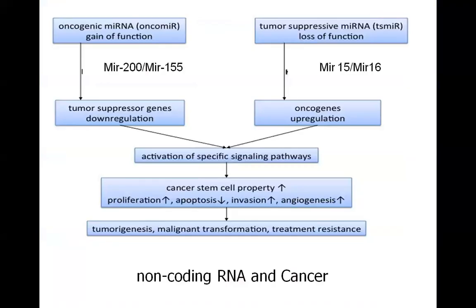Next, let's go to non-coding RNA and its association with cancer. MicroRNAs are involved in normal cell growth, survival, and differentiation, and they inhibit messenger RNA translation. MicroRNAs have been shown to undergo changes in cancer cells with frequent amplification and deletion within the RNA loci. They can have a down-regulatory function, which we would see with inactivation of the tumor suppressor gene, or an up-regulatory function associated with oncogene activation.